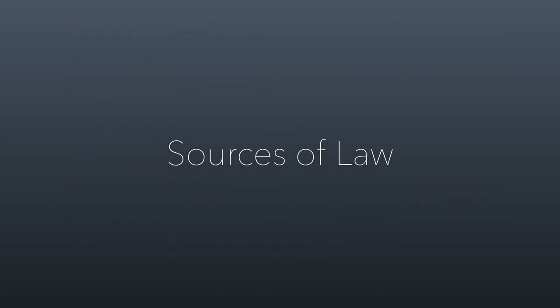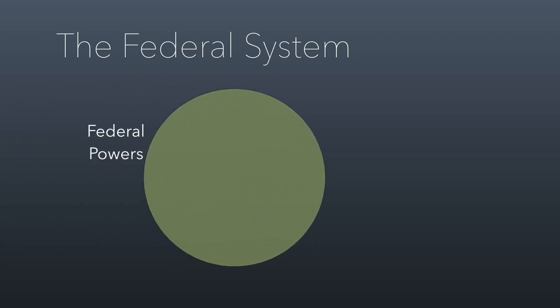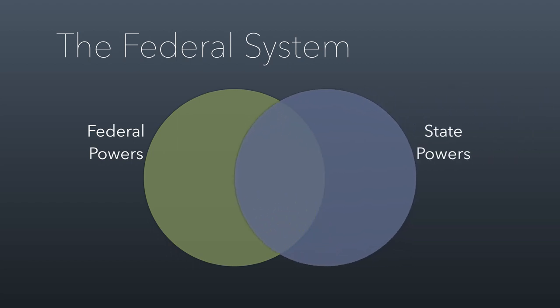So let's talk about where law comes from in the United States. In the U.S., we have what's called a federal legal system. That means we have a federal government that oversees national laws, and then we have state governments that each oversee the laws unique to their specific state. This is a pretty unique legal system in the world. The original concept at our founding was that the federal government would simply reflect important national priorities, but each state government would be relatively independent, although obviously the federal government has grown quite a bit since the founding of our country.